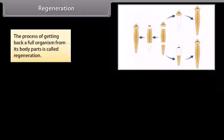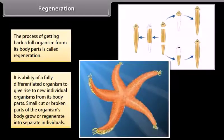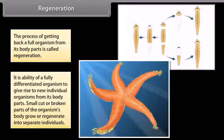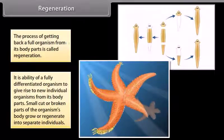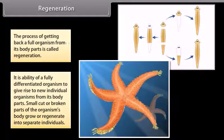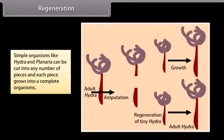Regeneration: The process of getting back a full organism from its body parts is called regeneration. It is the ability of a fully differentiated organism to give rise to new individual organisms from its body parts. Small cut or broken parts of the organism's body grow or regenerate into separate individuals. Simple organisms like hydra and planaria can be cut into any number of pieces, and each piece grows into a complete organism.